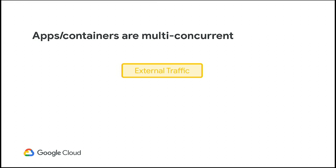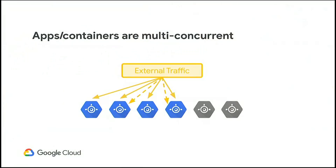Apps and containers running on Cloud Run are multi-concurrent by default. Functions handle one request per instance, but App Engine and Cloud Run apps will handle multiple requests per instance. Cloud Run gives a default concurrency limit of 80 — every instance, assuming it doesn't run out of memory or CPU, is bound to 80 concurrent requests. You can set that higher or lower. You could set Cloud Run to single concurrency and go back to that model if you want.